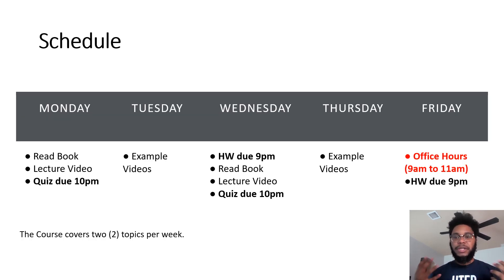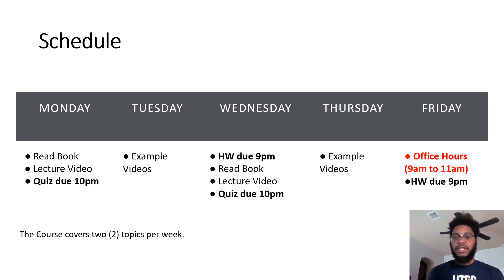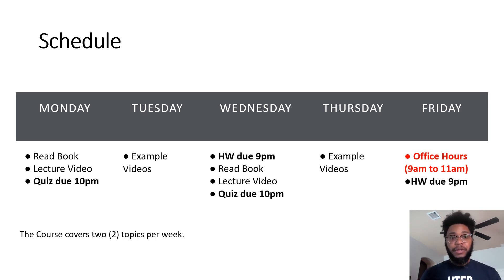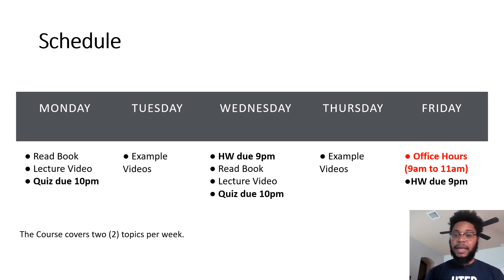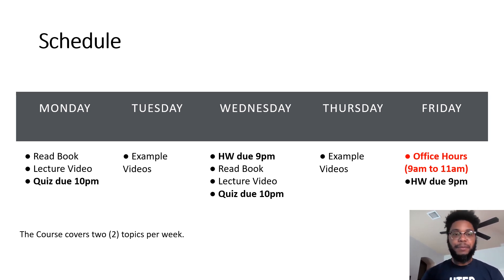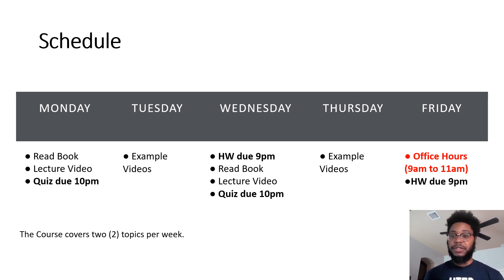So now let's look at what a typical schedule is for this statics course. A typical schedule is weekly. Each week there are two topics that you would cover. We'd start on Monday with covering our first topic, where you need to read the book, watch the lecture video for that topic, and then complete a quiz by 10 p.m. Then on Tuesday, there's a series of example videos up for that topic, so you need to watch those example videos and start completing your homework.